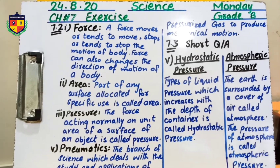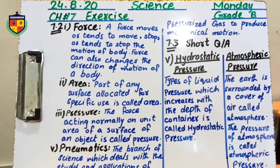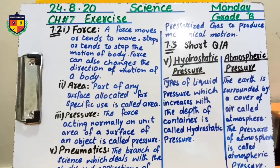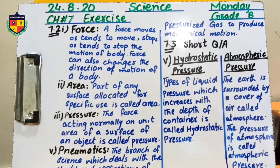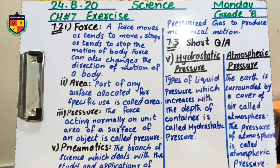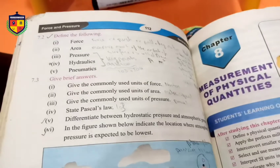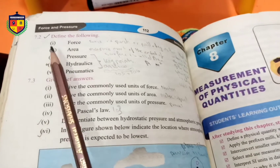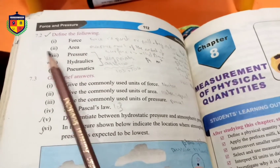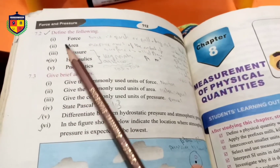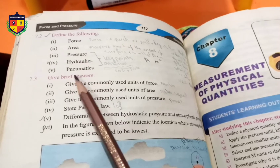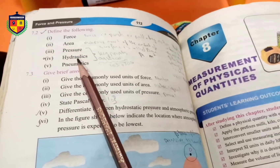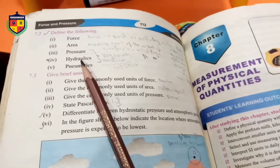We have exercise question number 7.2. Look at the book. 7.2: Define the following — Force, Area, Pressure, and Pneumatics.